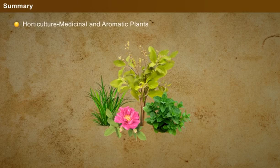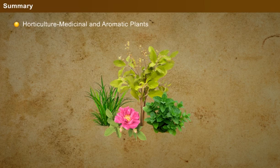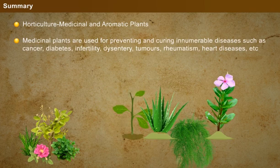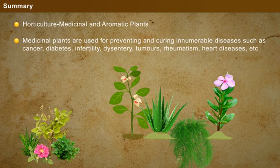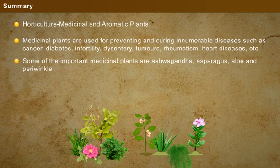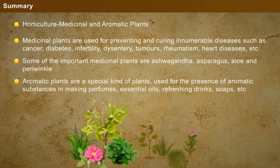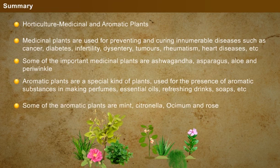Summary: That has been an interesting lesson about medicinal and aromatic plants. Medicinal plants are used for preventing and curing innumerable diseases such as cancer, diabetes, infertility, dysentery, tumours, rheumatism, and heart diseases. Some important medicinal plants are Ashwagandha, Asparagus, Aloe, and Periwinkle. Aromatic plants are a special kind of plants used for the presence of aromatic substances in making perfumes, essential oils, refreshing drinks, and soaps. Some of the aromatic plants are Mint, Citronella, Osimum, and Rose.